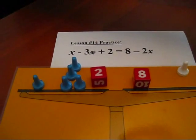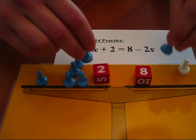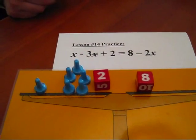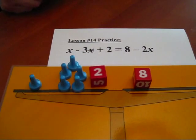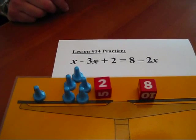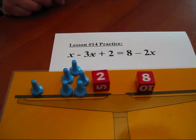And I can add a blue pawn to each side again. Yes. And now? And do this again. Yes. So, apparently, pawn equals 1. Each x is equal to 1. Okay, how do you know each x is equal to 1?